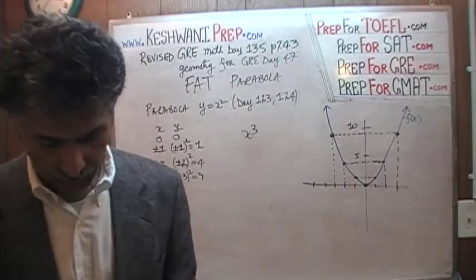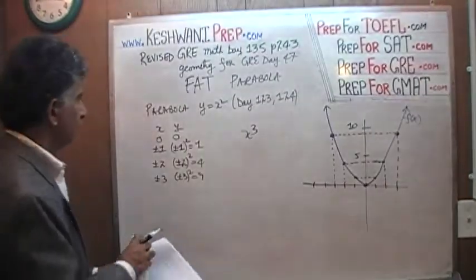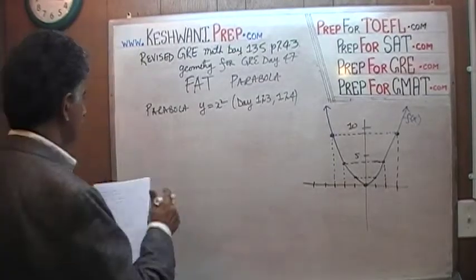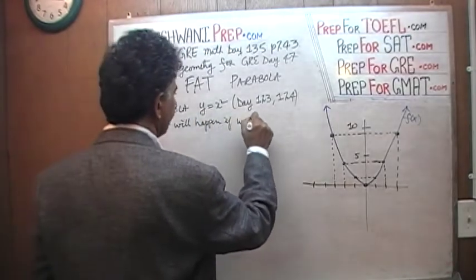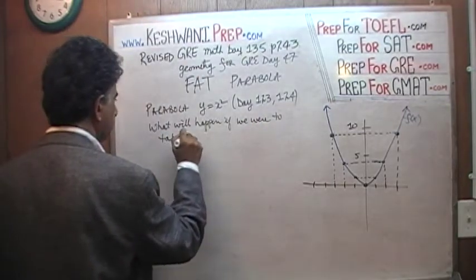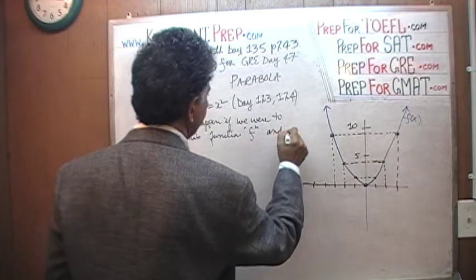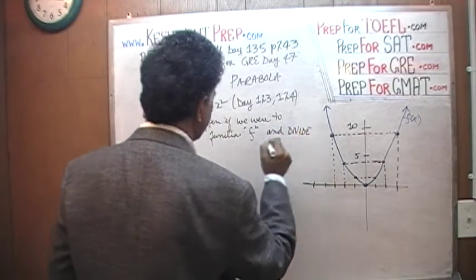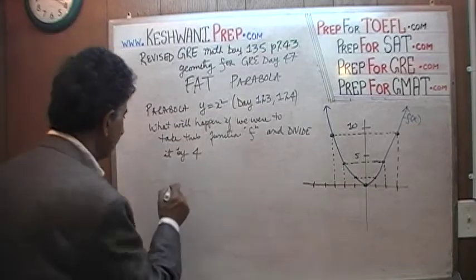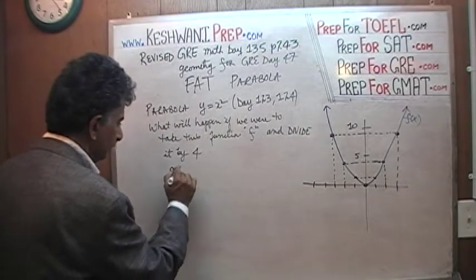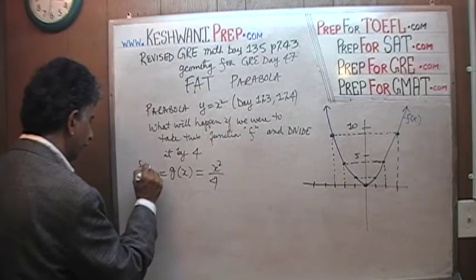Now the question is: what's going to happen if we were to take this equation and divide it by 4? If you were to divide f by 4, we need to give this new function a new name. Let's call it g. So g of x is going to be x squared divided by 4. So g of x equals f of x divided by 4.